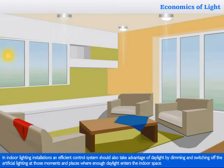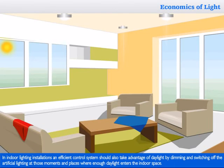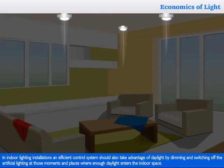In indoor lighting installations, an efficient control system should also take advantage of daylight by dimming and switching off the artificial lighting at those moments and places where enough daylight enters the indoor space.